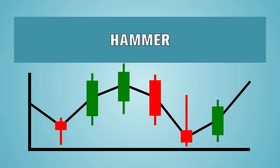The hammer has a small body and larger shadow below it. The hammer is another indicator of a bullish reversal pattern. Confirmation of the reversal pattern is when a hammer is followed by a green candle closing well above the body of the hammer.